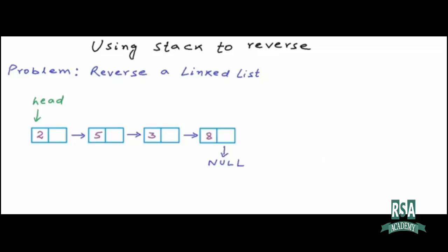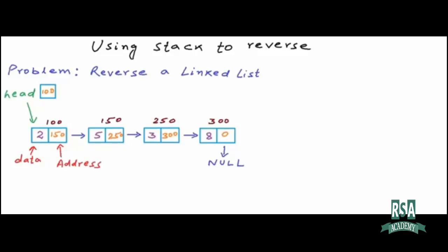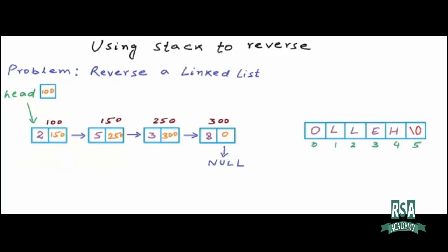I have drawn a linked list of integers here. Linked lists are collections of nodes, where each node contains two fields: one to store data and another to store the address of the next node. I've assumed these nodes are at addresses 100, 150, 250, and 300. The identity of a linked list is the address of the head node, typically stored in a variable named head. In an array, it takes constant time to access any element because it's stored as a contiguous block of memory.